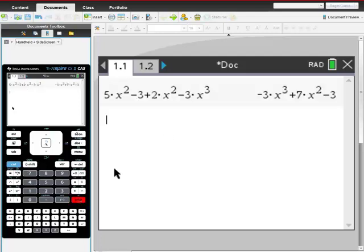right? So let's do it again. And there it is, negative 3x cubed plus 7x squared. And it did gather all those like terms.